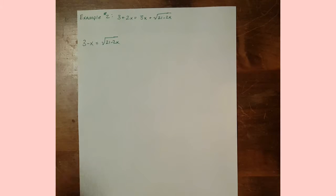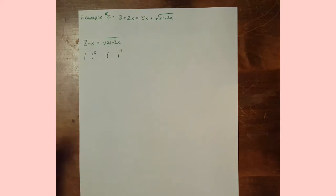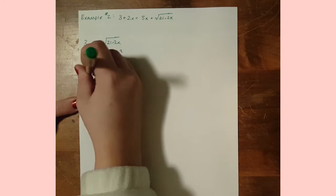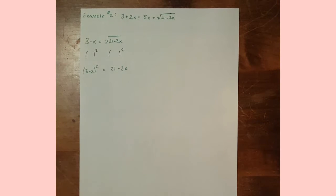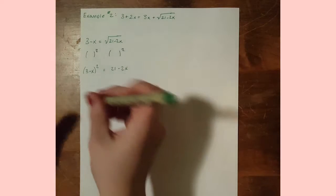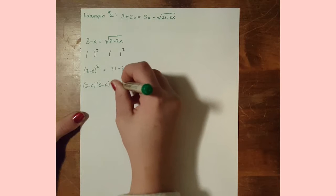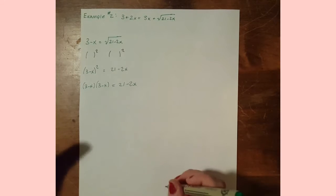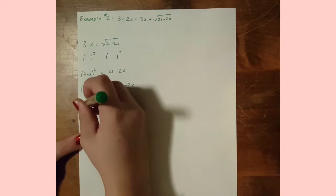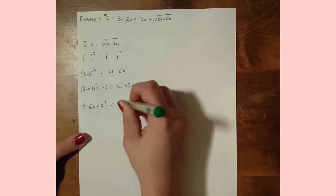Now to get rid of the radical we're going to square both sides. We get the quantity 3 minus x squared equals 21 minus 2x. It's evident we need to do some FOILing: 3 minus x times 3 minus x equals 21 minus 2x, which expands to 9 minus 6x plus x squared equals 21 minus 2x.